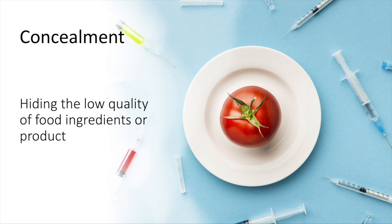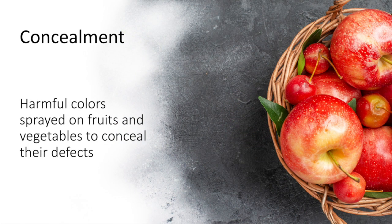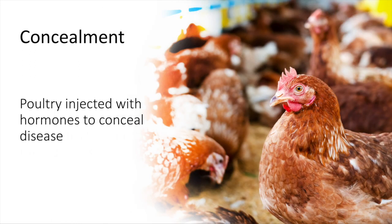Concealment is hiding the low quality of food ingredients or products. For example, harmful colors are sprayed on fruits and vegetables to conceal their defects, and poultry is injected with hormones to conceal disease.